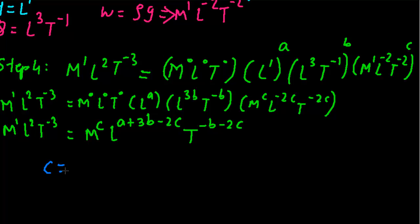C is equal to 1, a plus 3b minus 2c is equal to 2, and minus b minus 2c is equal to minus 3.